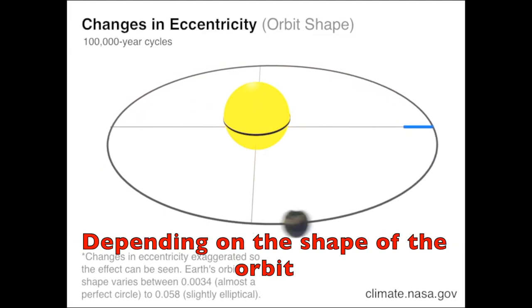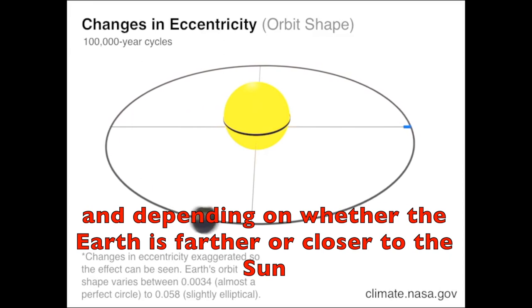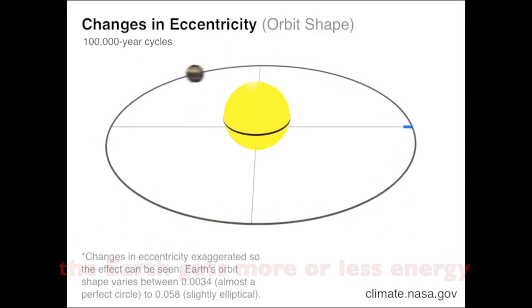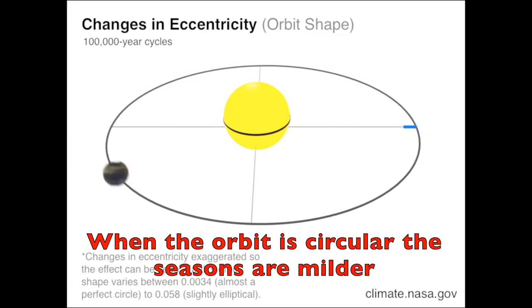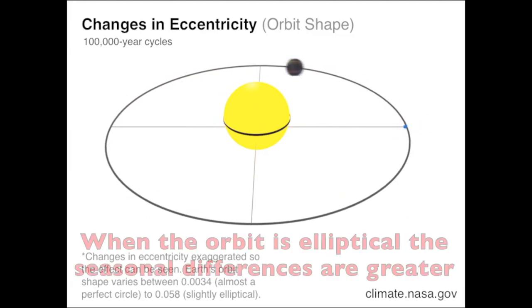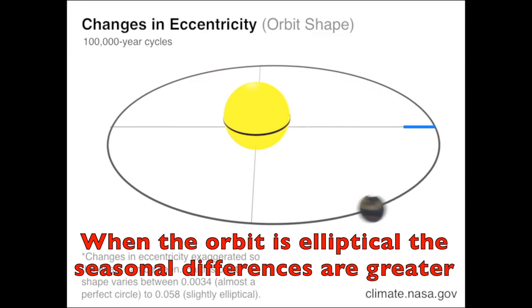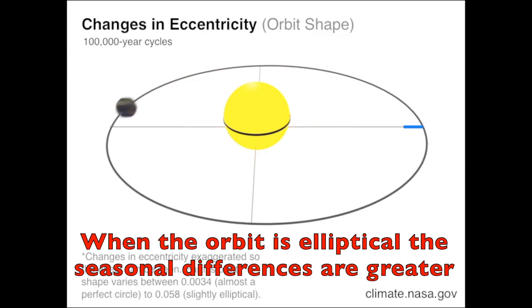Depending on the shape of the orbit, and depending on whether the Earth is farther or closer to the sun, the Earth gets more or less energy. When the orbit is circular, the seasons are milder. When the orbit is elliptical, the seasonal differences are greater.